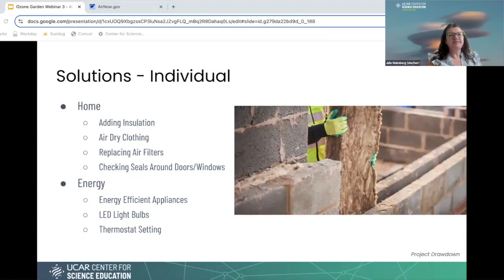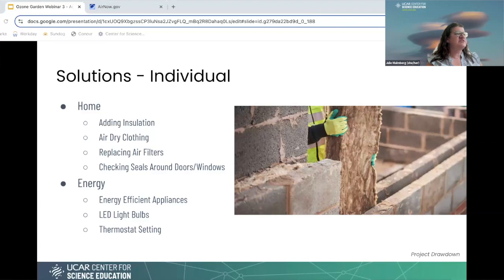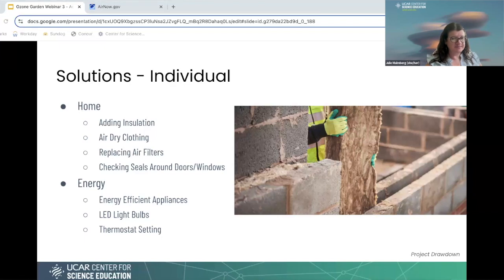Thinking about your home: you can look at adding insulation, air drying your clothing, replacing air filters, checking the seals around your doors and windows — sealing those off can really help with local air quality. Also look at energy efficient appliances, LED light bulbs — which are sometimes provided for free from companies in your area — and your thermostat setting. Setting temperatures higher in the summer and lower in the winter can help your energy consumption and therefore your pollutant sources. Better insulation also means a lower energy bill.